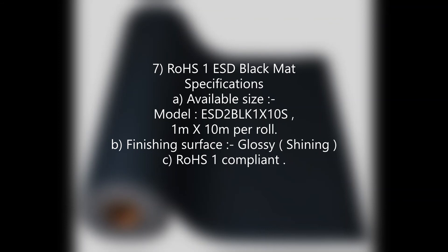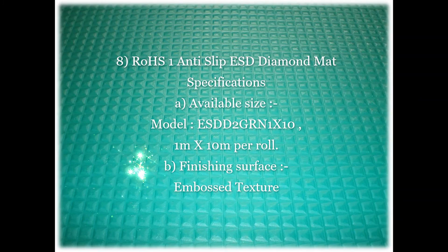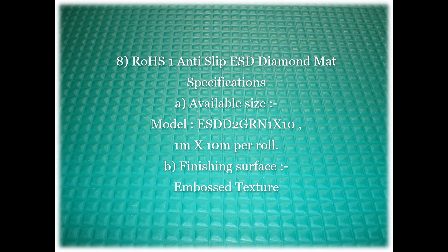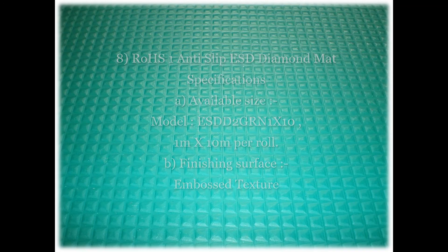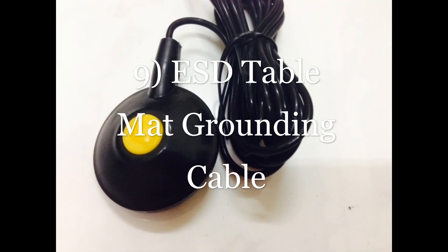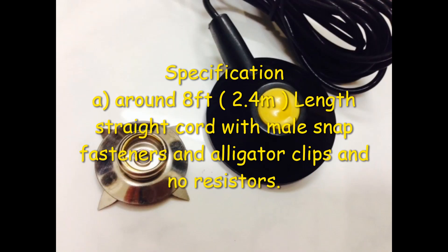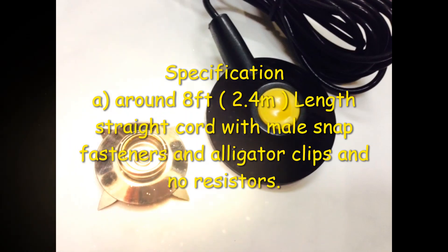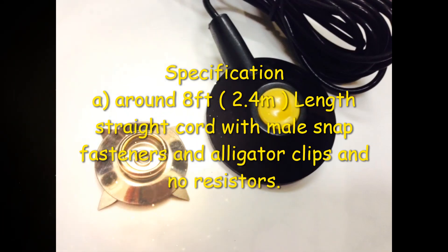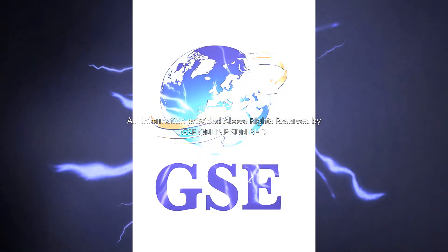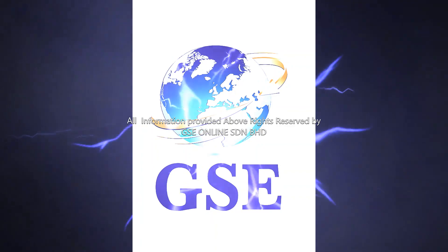RoHS 1 ESD Black Mat. Finishing surface: glossy. RoHS 1 compliant. Grounding cable: 6.4 m length per piece, straight cord with male snap fasteners and alligator clips and no resistors. All information provided above is rights reserved by GSE Online.